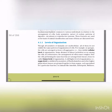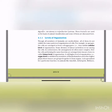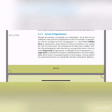Level of organization: Though all members of Animalia are multicellular and eukaryotic, all of them do not exhibit the same pattern of organization of cells. For example, in sponges the cells are arranged as loose aggregates — they exhibit a cellular level of organization, with some division of labor among the cells. In coelenterates, the arrangement of cells is more complex; cells performing the same function are arranged into tissues, giving tissue level of organization.